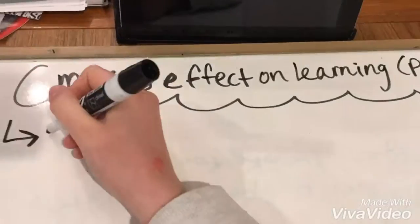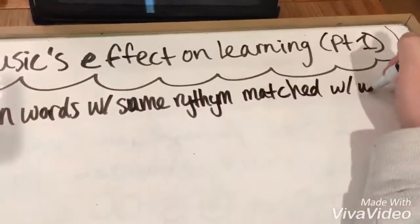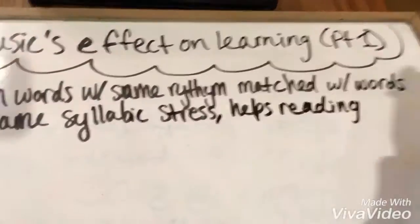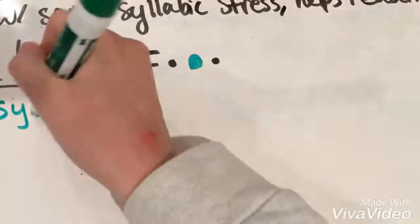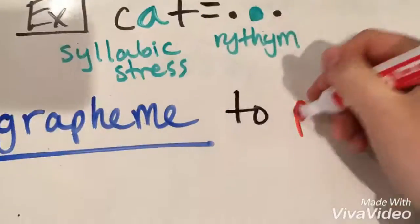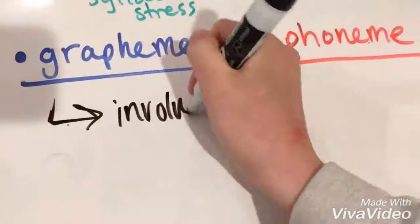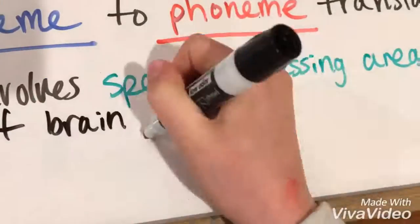Also, music helps learning. For example, when words with the same rhythm are matched with words with the same syllabic stress, it helps reading. Grapheme to phoneme translation takes place in this process, and this involves speech processing areas of the brain.